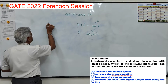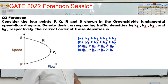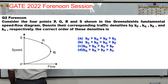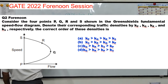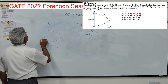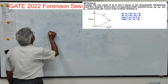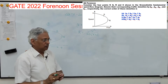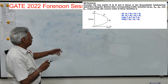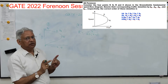The second question: consider four points P, Q, R, S as shown in the figure — a speed-flow relationship diagram where the x-axis is flow Q and the y-axis is speed. If you denote their corresponding traffic densities by Kp, Kq, Kr, and Ks, what is the relationship between these four densities?